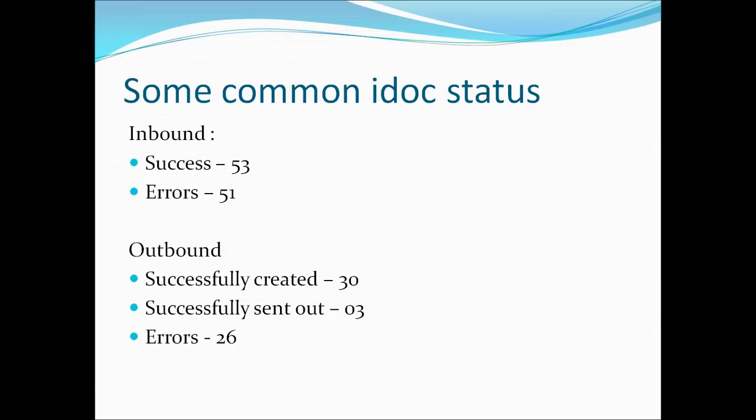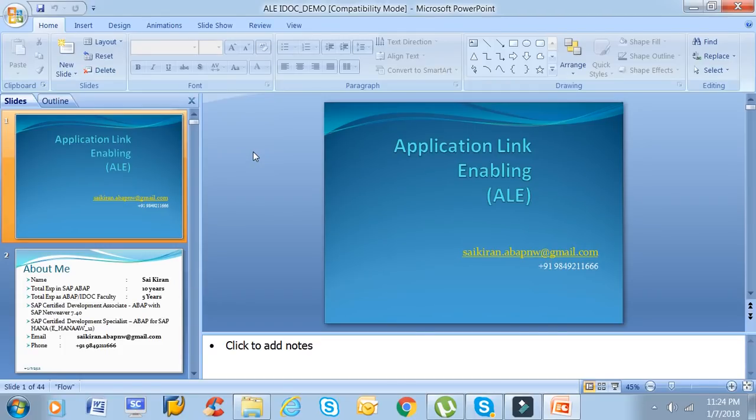By looking at the IDOC status you can diagnose the error — you may not pinpoint it exactly but can at least narrow it down. There are status codes from 1 to approximately 78: statuses 1 to 50 represent outbound statuses, and from 51 to around 73 or 74 represent inbound statuses.